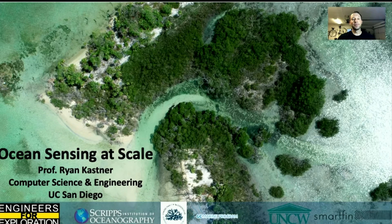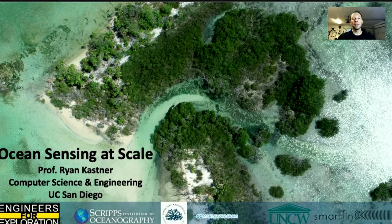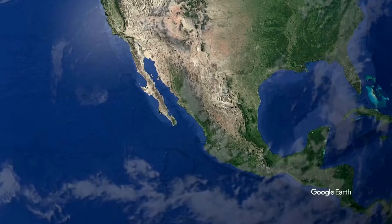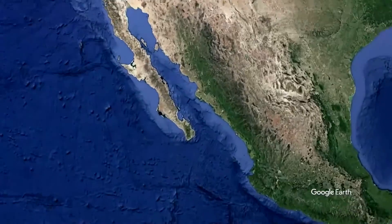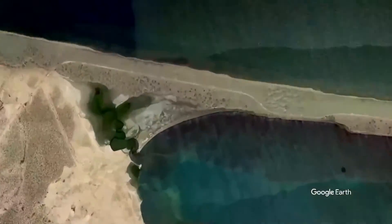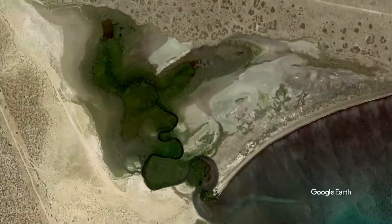Some have been successful. Many have been failures. I want to use this short talk to highlight two of our recent successful projects and describe the key elements that made them successful. We start with the Mangrove Monitoring Project. In our main area of interest in Baja California Sur, we have tried different techniques near cities like La Paz to monitor mangrove forests.